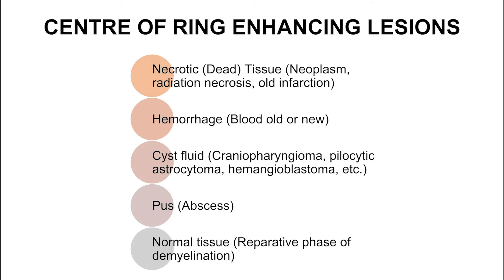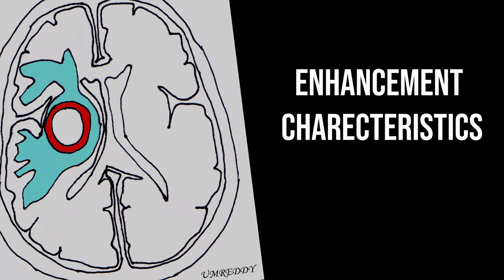The center of the ring enhancing lesion consists of necrotic tissue as in neoplasm, radiation necrosis, or old infarction. It can be hemorrhage in some cases. It can be cyst fluid in craniopharyngeoma, pilocytic astrocytoma, or hemangioblastoma. It is pus in cases of abscess, and it can be normal tissue in cases of demyelination.